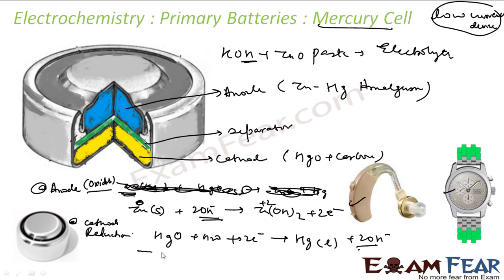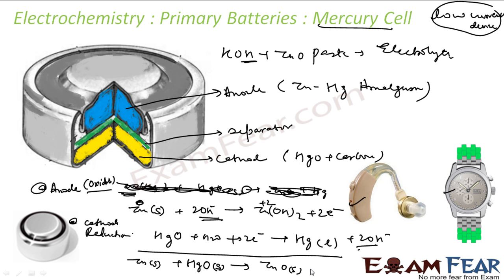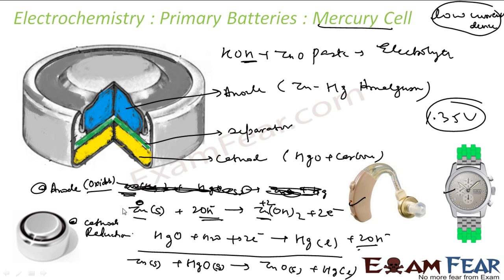The overall reaction is: Zn (solid) + HgO (solid) → ZnO (solid) + Hg (liquid). There are no ions in solution — everything is in paste form. The cell has a voltage of almost 1.35 volts and can be used for a longer period of time. In summary, zinc is oxidized to Zn²+ at the anode, and Hg²+ is reduced to Hg at the cathode.